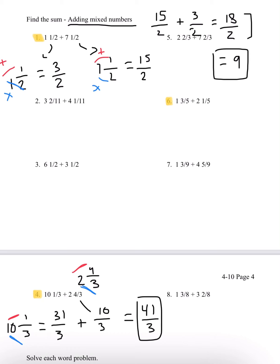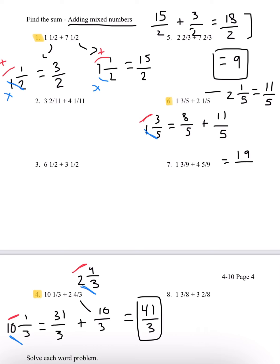Lastly, number 6. We have 1 and 3 over 5, plus 2 and 1 over 5. For 1 and 3/5: 5 times 1 is 5, plus 3 is 8, so it's 8 over 5. For 2 and 1/5: 5 times 2 is 10, plus 1 is 11, so it's 11 over 5. So we're going to do 8 over 5 plus 11 over 5. When we add this, we get 19 over 5, which is our answer for number 6.